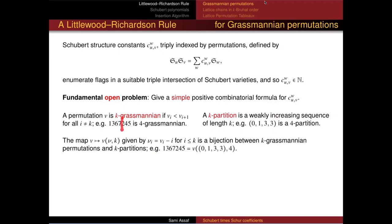K-Grassmannian permutations are in bijection with K-partitions. I'll be reversing a lot of conventions. A K-partition has K numbers that weakly increase. The bijection: subtract 1 from the first, 2 from the second, 3 from the third, 4 from the fourth. So 1→0, 3−2=1, 6−3=3, 7−4=3 gives the partition. You go back by adding 1, 2, 3, 4 and appending the remaining numbers in increasing order.